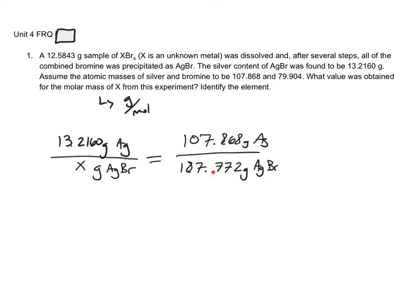107 to 187, then the actual mass of Ag should be proportional, 13.2 to X. I'm going to cross-multiply and divide, and X is equal to 23.01 grams of AgBr.